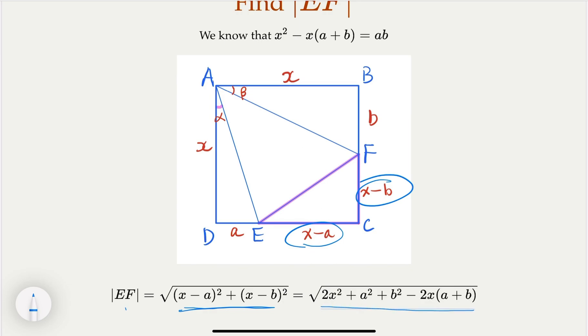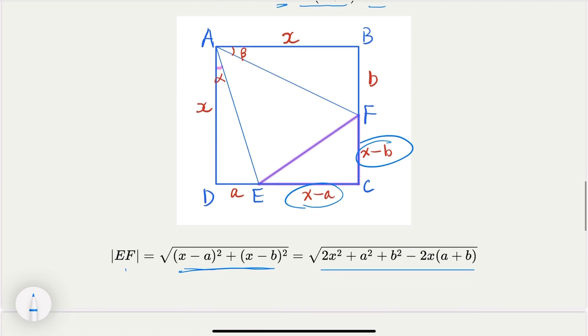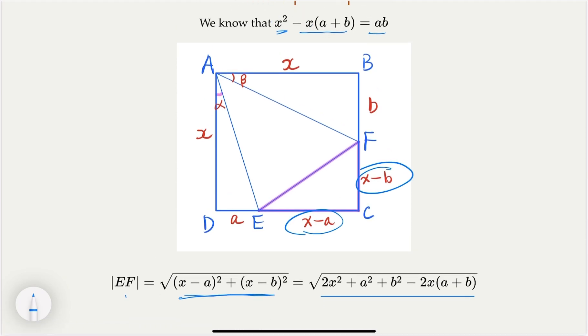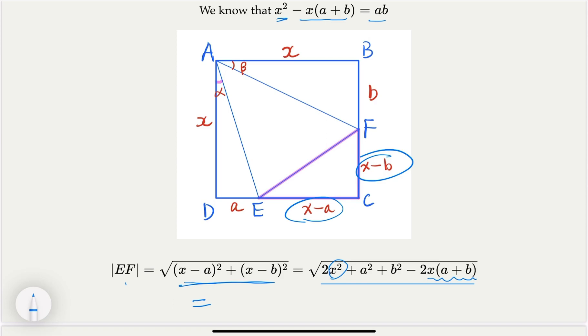However, earlier we have shown that x squared minus x times a plus b equals ab. So let's do that. Let's plug that in. So x squared minus x times a plus b, and we have a factor of 2. So in other words, you're going to continue this equation. It equals square root of this term here, which can be replaced with 2ab. Why? Because it's from this equation earlier.